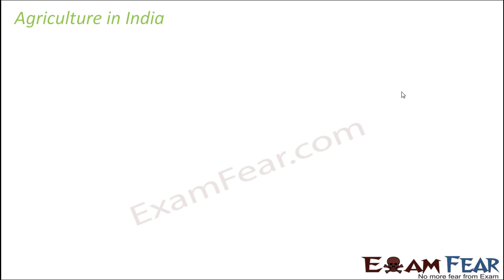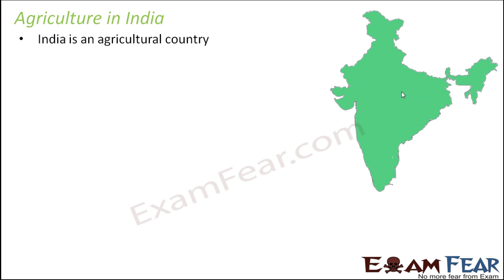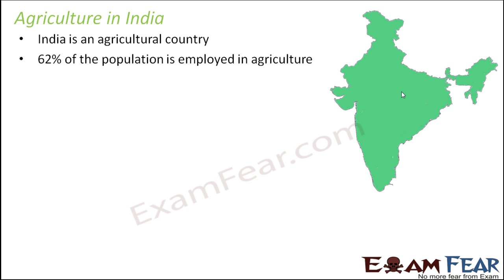When we talk about plant breeding, especially in India, it is very obvious to talk about agriculture because India is an agricultural country where agriculture is the primary source of income for the entire population. After independence, it was a big challenge for India to provide food to the entire population because the population was continuously increasing. Almost 62% of the population is employed in agriculture, and agriculture provides food required by all people.